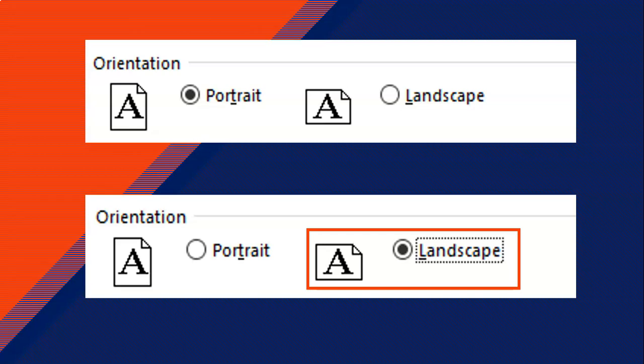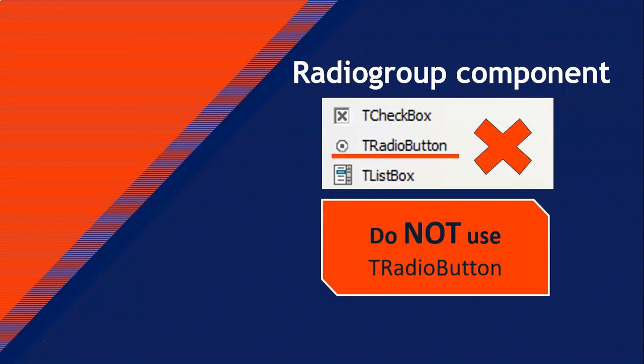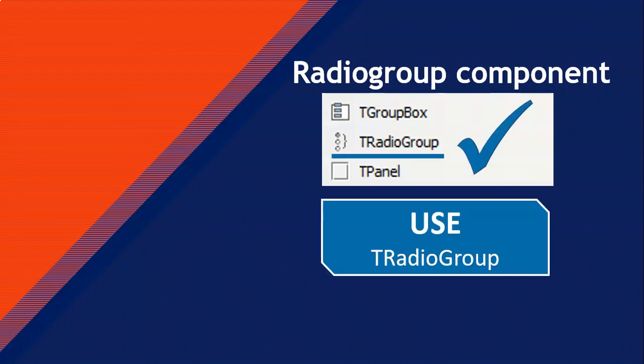We can use radio buttons in our Delphi program. If you go to the object inspector and look through the list, you'll see a radio button — but do not use the T radio button. This lesson is not about the T radio button. We're going to use a different component that does the exact same thing and makes our life a little bit easier. Go further down and you'll see a T radio group — that's the one to use.